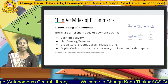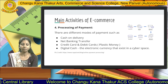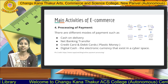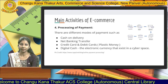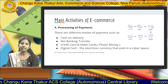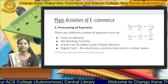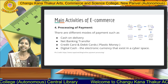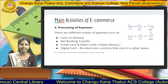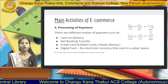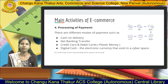Next, we have payment processing. This is also a main activity. Various methods are involved in e-commerce shopping, like cash on delivery, net banking transfer — that is NEFT or RTGS — credit card and debit card. Plastic money is also used for processing of payment in e-commerce. We also have digital cash, like electronic currency, that exists in cyberspace for payment processing.